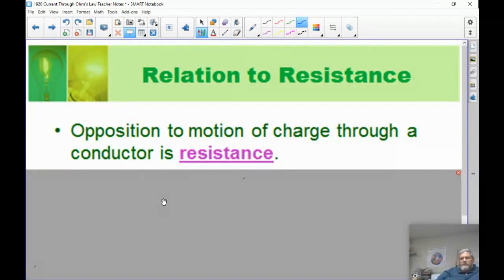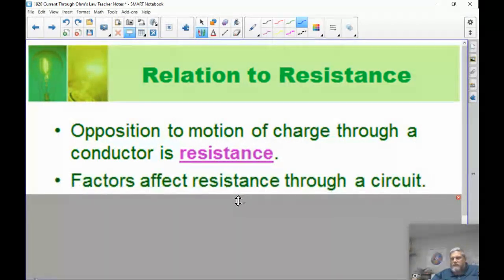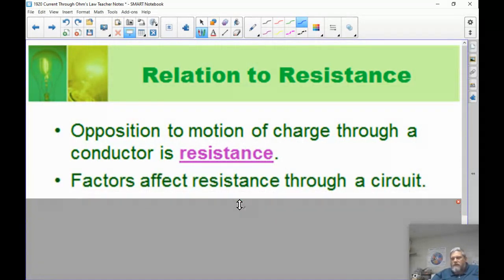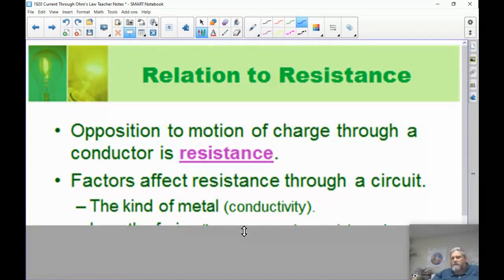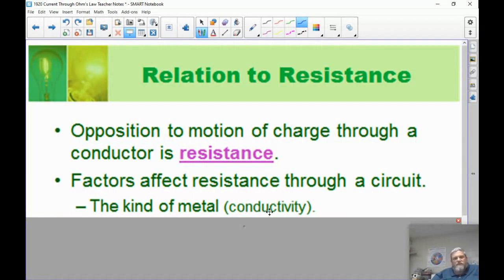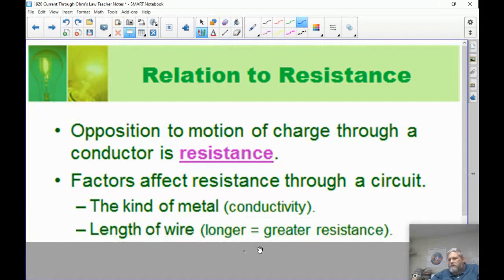This opposition to the motion of charge, of electrons moving through a conductor, moving through a wire, is called resistance. The factors that affect resistance through a circuit include the type of metal. Different metals have different resistances. Some are better conductors than others. If you have good conduction, the resistance is less. Gold and silver conduct electricity better than aluminum, but they're all very good.